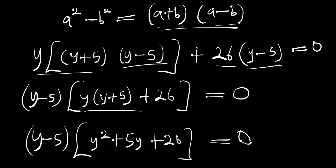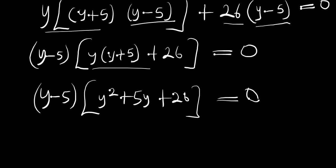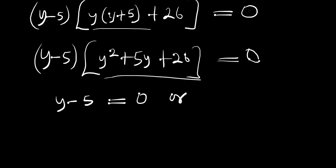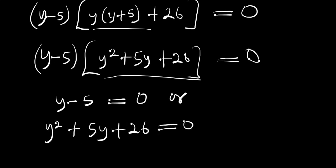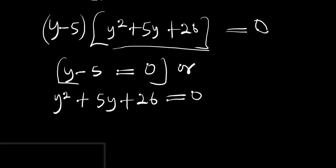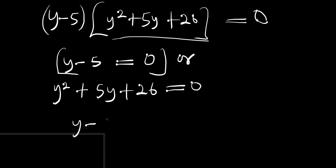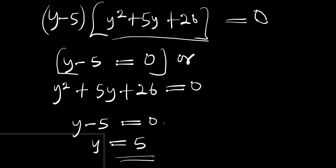We now have two equations: y - 5 = 0, or y² + 5y + 26 = 0. Starting with the first equation, y - 5 = 0 gives y = 5.